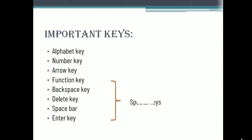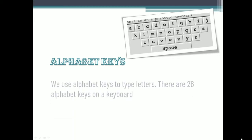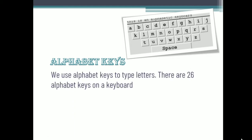In the previous chapter we studied that on a keyboard we can see five sets of keys: alphabet key, number key, arrow key, function key, and special key. In this chapter let's check what the use of all these keys is. The first type of keys are called alphabet keys. There are 26 alphabet keys on the keyboard, which we can use to type letters — A to Z.